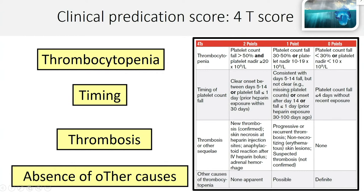The timing of five to ten days earns full points, as does a platelet fall within 24 hours in the setting of recent heparin exposure — that's the classic HIT presentation. Presence of thrombosis and absence of another cause (the second 'T') are also scored, though the latter is subjective. Many patients have several medications that could potentially cause thrombocytopenia. Despite its limitations, the 4T score has good sensitivity and clinical utility, particularly for identifying low-probability patients.